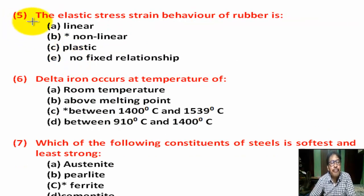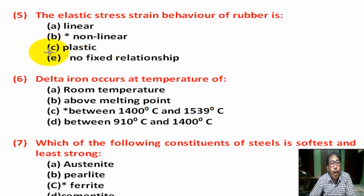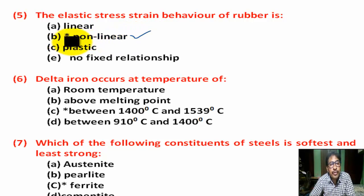Question number 5: The elastic stress-strain behavior of rubber is — Option A: linear. Option B: non-linear. Option C: plastic. Option D: no fixed relationship. Correct answer is Option B — non-linear.